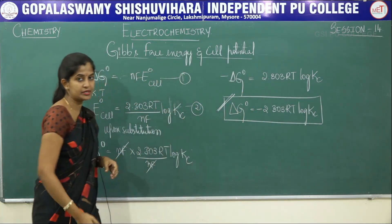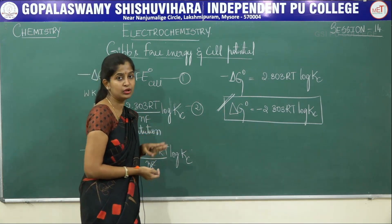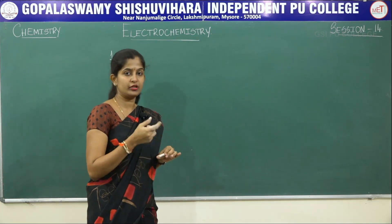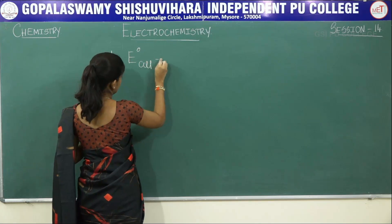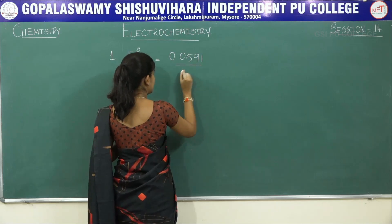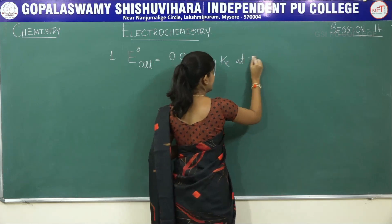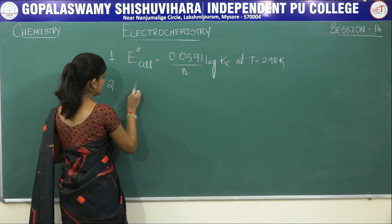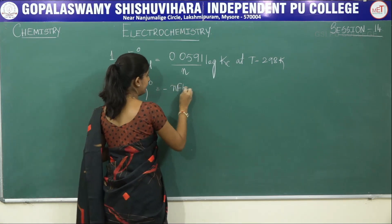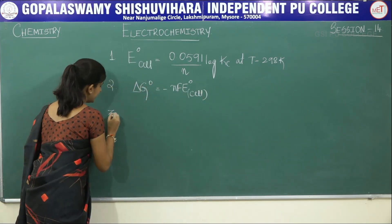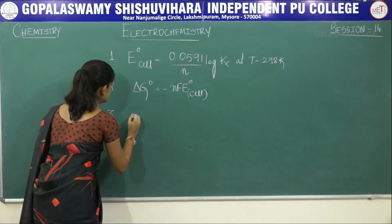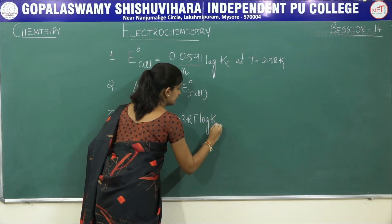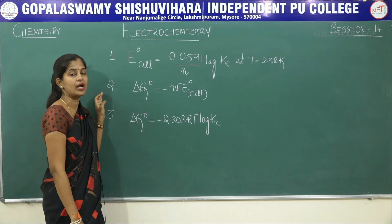So there are three important relationships on which you have to do numericals. First: E°cell = 0.0591 / N × log Kc at temperature = 298 K. Second: delta G naught = −nFE°cell. Third: delta G naught = −2.303RT × log Kc. These are your three key relationships for solving numericals in electrochemistry.